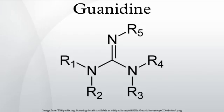Guanidinium thiocyanate is also used for its denaturing effect on various biological samples. Guanidine hydrochloride is used as an adjuvant in treatment of botulism, introduced in 1968, but now its role is considered controversial because in some patients there was no improvement after drug administration. Guanidinium hydroxide is the active ingredient in some no-lye hair relaxers.